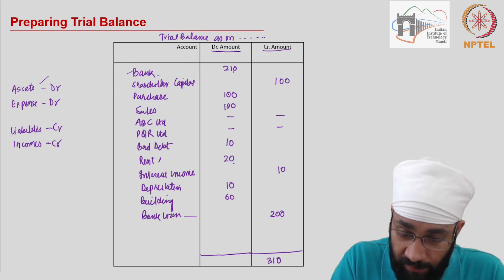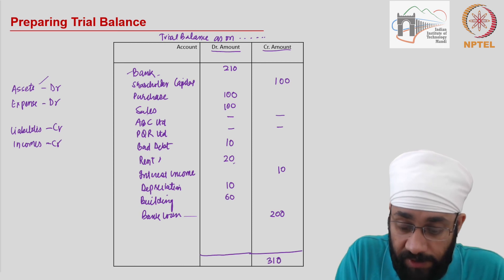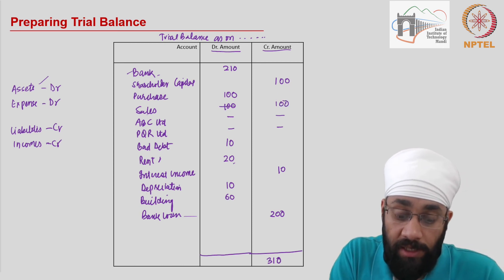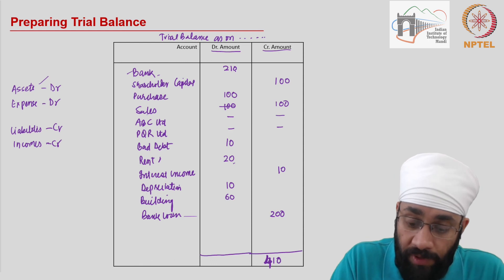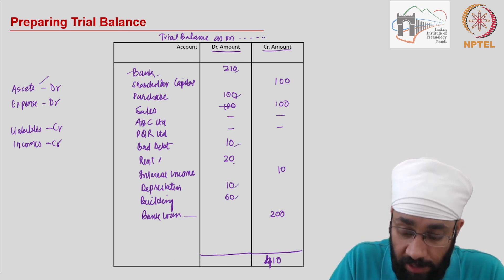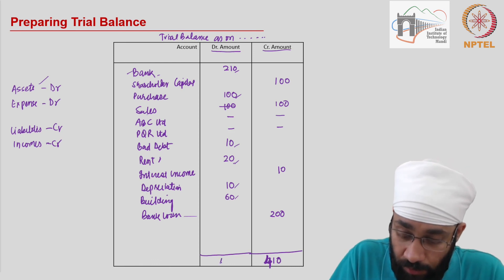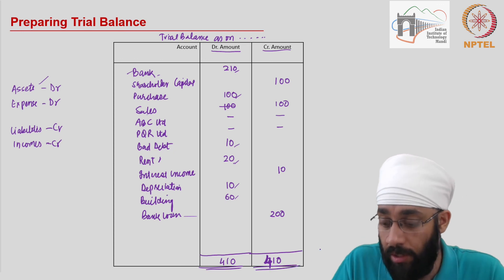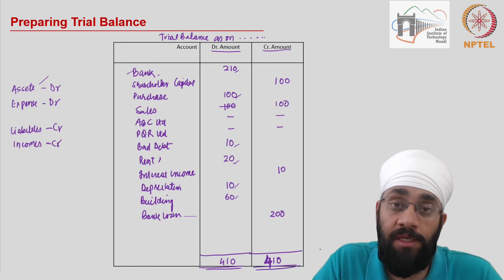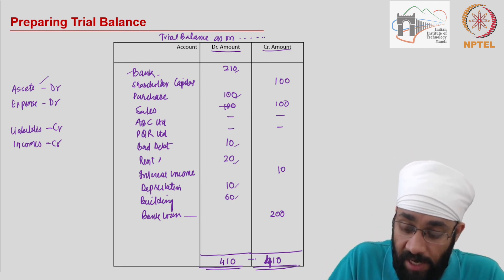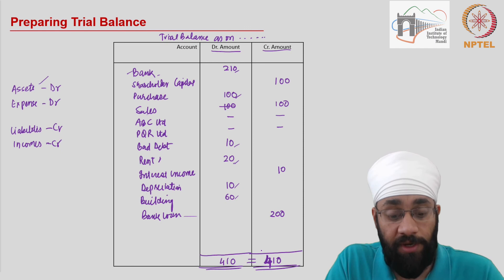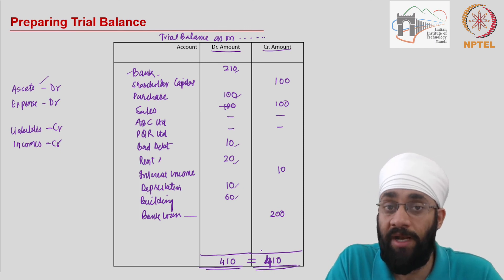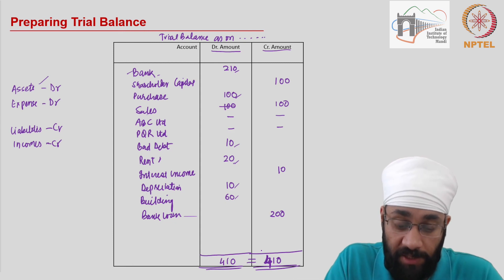We've made a mistake here — sales should be on the credit side as well because sale is an income. So the credit total should be 410 instead. On the debit side: 210, 310, and you have 60, 70, 80, and 100 — so this also comes out to be 410. We close it with the conventional two underlines. The trial balance is agreeing in the sense that debits are equal to credits. Debit amount equal to credit amount means the double entry system has been followed — at least mathematically there is no mistake, though there could still be errors we'll discuss in future videos.